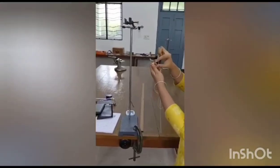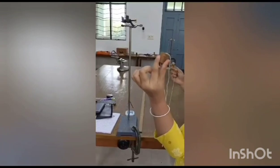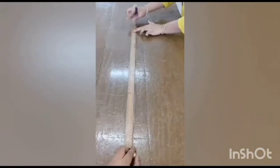Coming to the experiment, we should take length accordingly from the point of suspension to the center of the bob. Make sure you consider radius of the bob and the hook length.